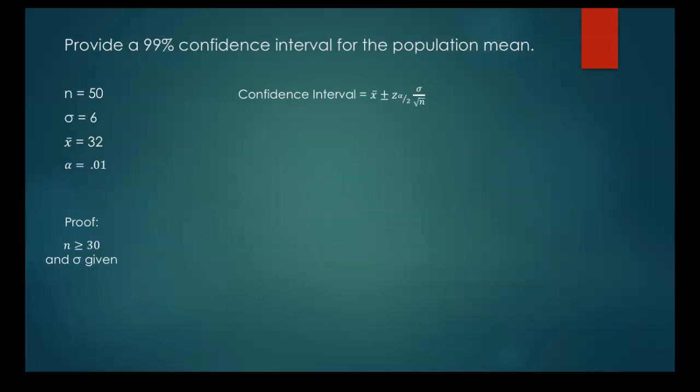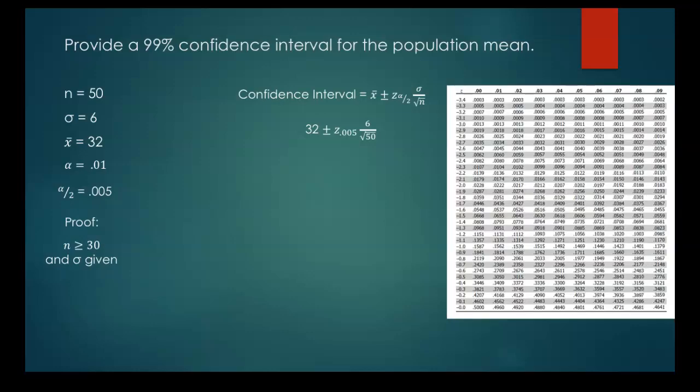So now the last part of this problem. They want us to make a 99% confidence interval. So alpha now is just 0.01, which means alpha divided by 2 is 0.005. So we plug everything into our confidence interval formula again. The only thing that's changing here is the z-score. So we look up the z-score now for 0.005.